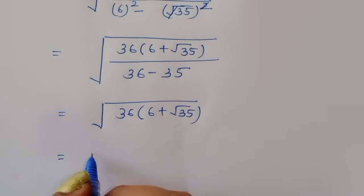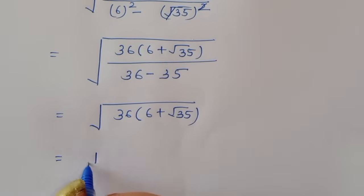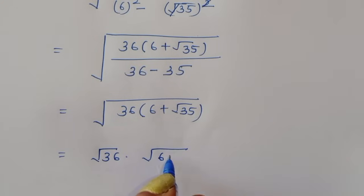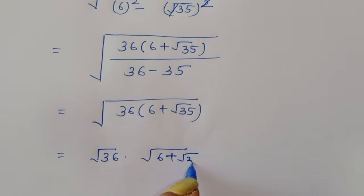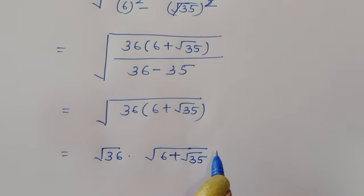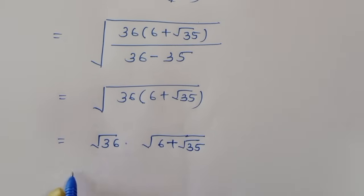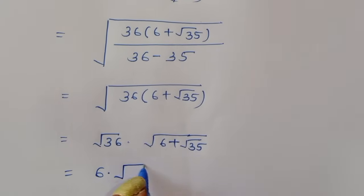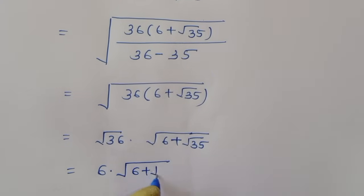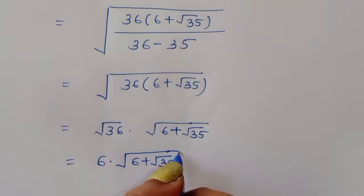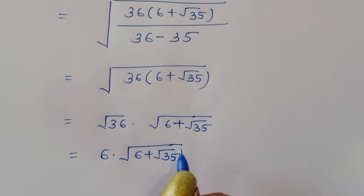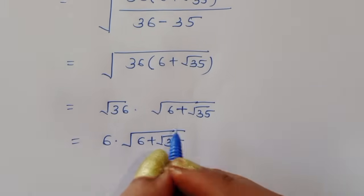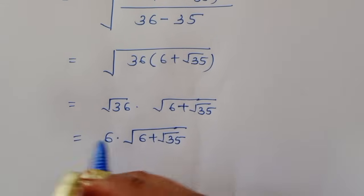We can separate this term: square root of 36 times square root of (6 plus square root of 35). Now square root of 36 is 6, so we have 6 times square root of (6 plus square root of 35).